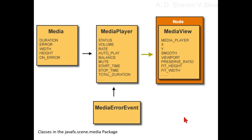Directional arrows connect the boxes. An arrow points from the Media box to the MediaPlayer box. Another arrow points from the MediaPlayer box to the MediaView box. A third arrow points up from the MediaErrorEvent box to the MediaPlayer box.